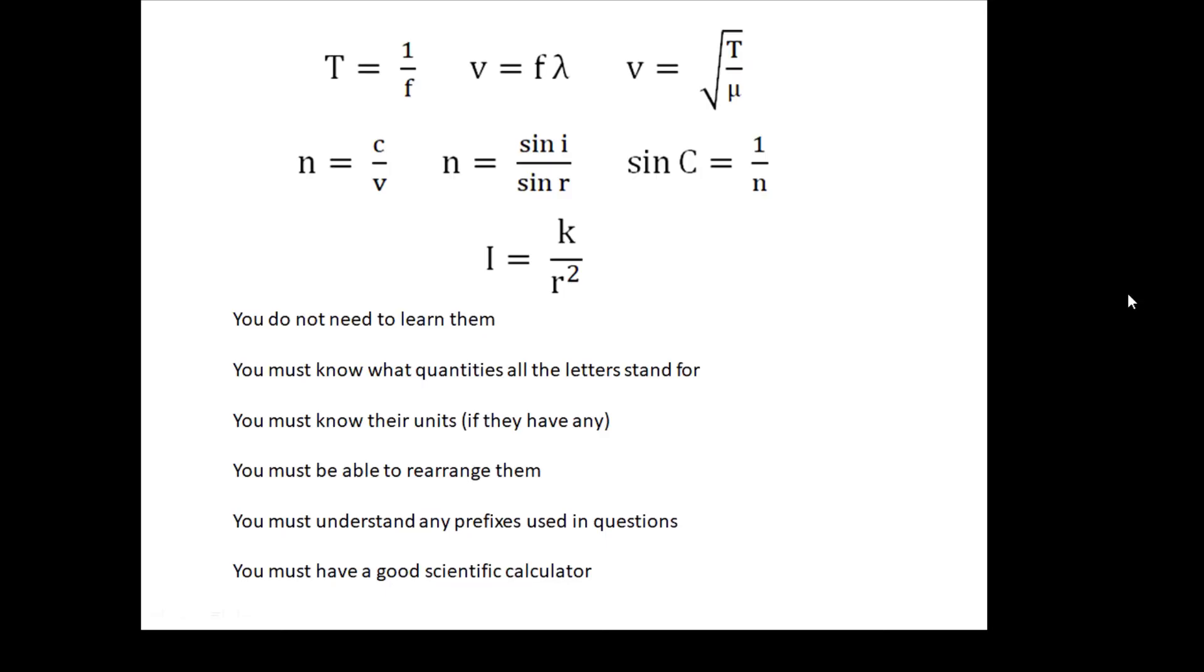Very important is prefixes. On the next slide, we're going to talk about prefixes. And again, this is something that a lot of students struggle with. You must have a good scientific calculator. Not a mobile phone, not a pathetic thing that you got free in a Christmas cracker. A good scientific calculator. And you can buy one for about a fiver. If you haven't got one, then it's about time you grew up now. You're a big boy, a big girl. Get yourself a proper grown-up scientific calculator.